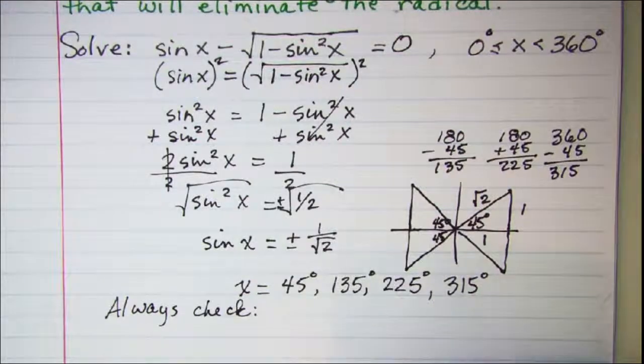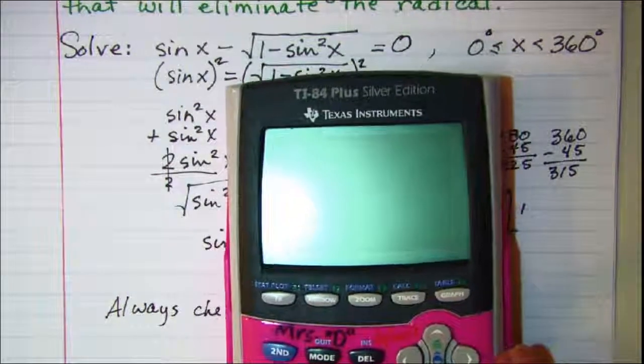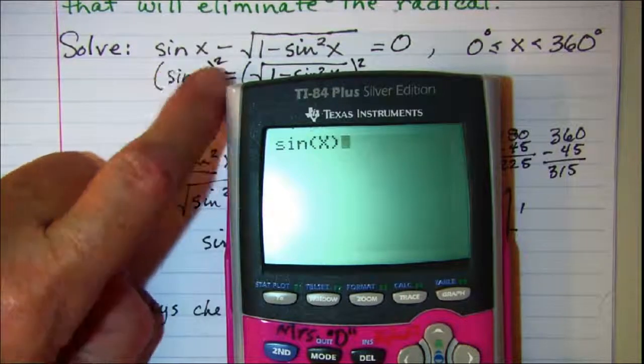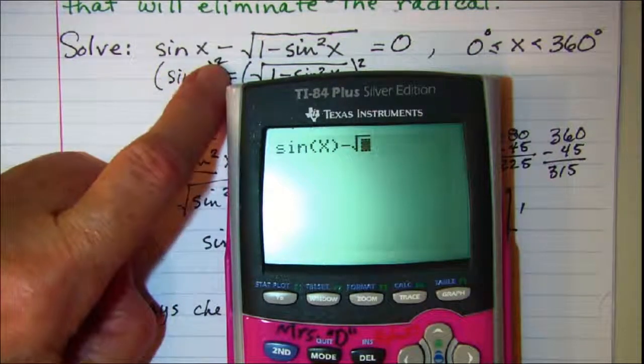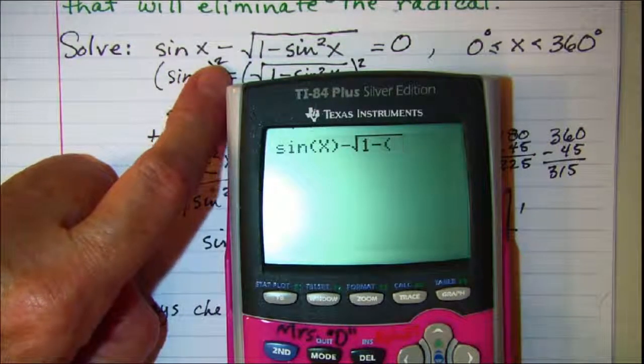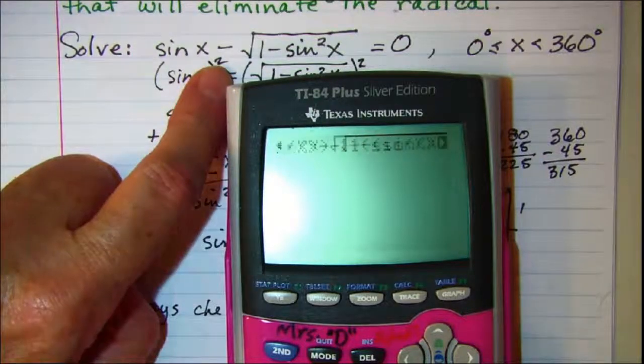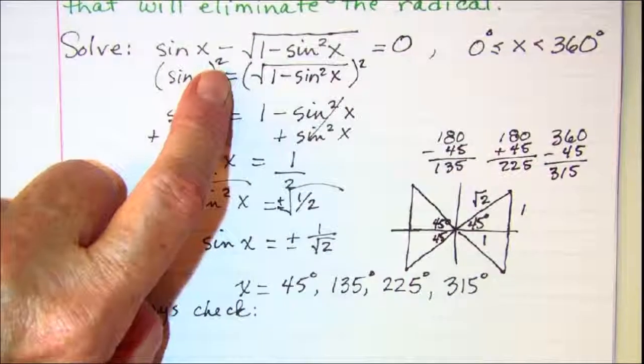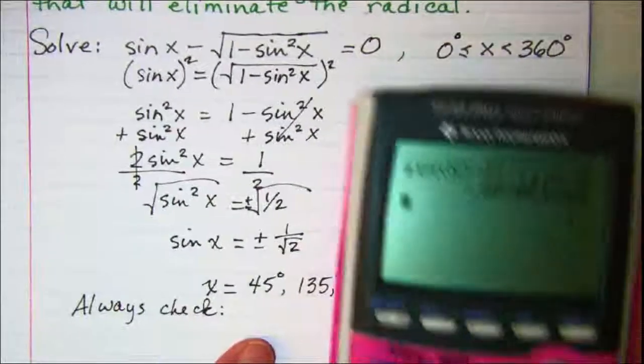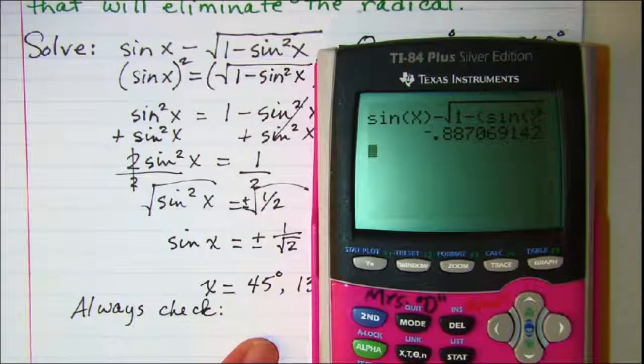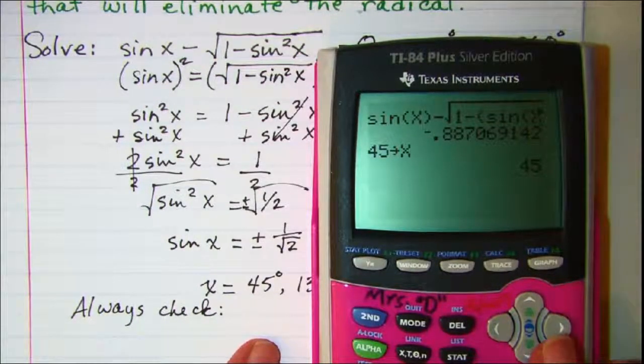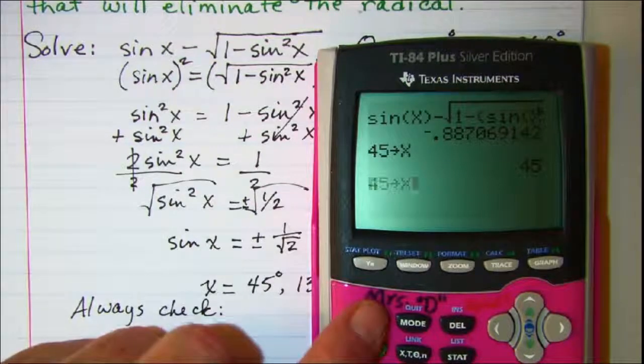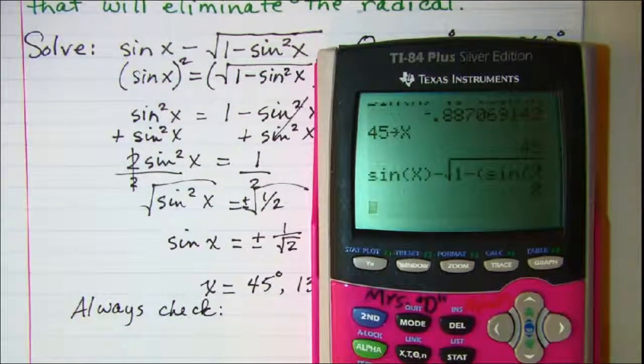We're going to check these four angles in my equation. I'm going to enter sin x minus the square root of 1 minus sin x squared and then see if it's 0. I'm going to store 45 degrees into my calculator in place of x. I have 0, so 45 does work.